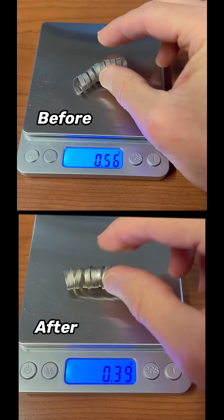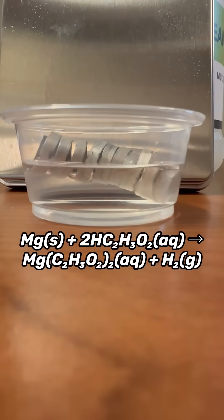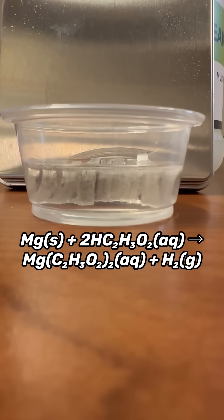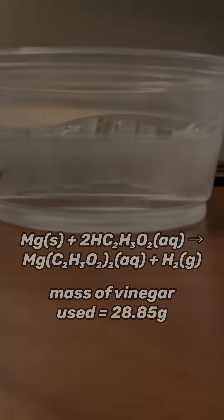Okay, so here's a challenge for you. Based on the mass of magnesium that reacted, the chemical equation that describes the reaction between magnesium and acetic acid, and the mass of vinegar used, calculate two things: the mass of acetic acid that must have reacted, and the percent by mass of acetic acid in the vinegar.